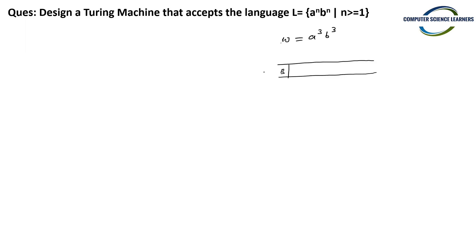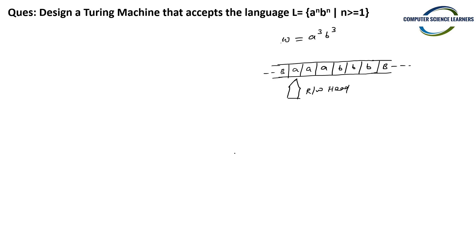Suppose we have a blank space, then a to the power 3 — that is A A A — and then B B B, and at last again a blank space. It is an infinite Turing machine. Initially, the read-write head is positioned at the beginning of the input.